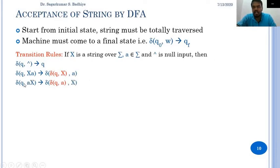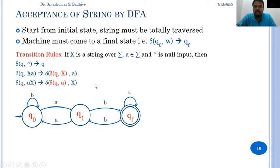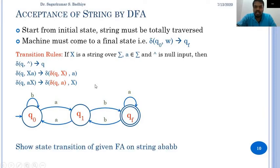Similarly, delta of q comma ax derives to delta of delta of q comma a, comma x. This means that the automata in state q reads symbol a, goes to some other state, and from that it reads the string x and goes to some other state. Now consider the given deterministic finite automata and show the state transition on the input string a b a b b.